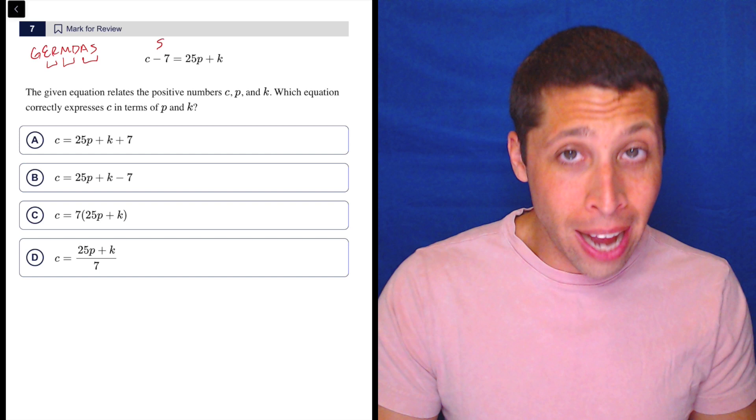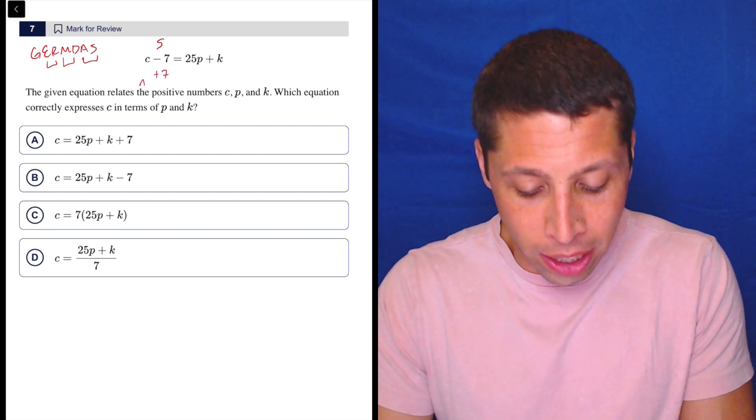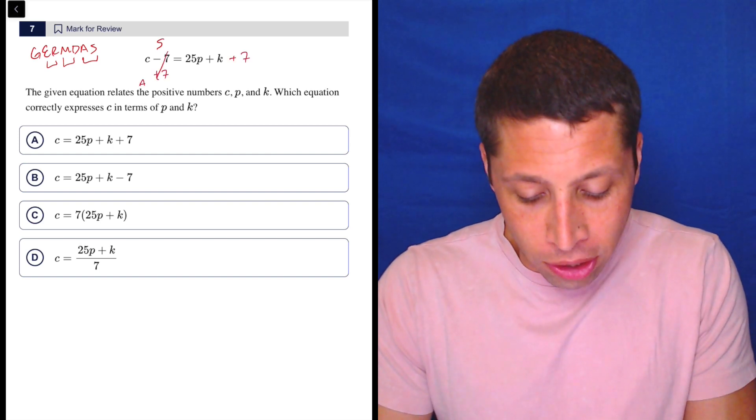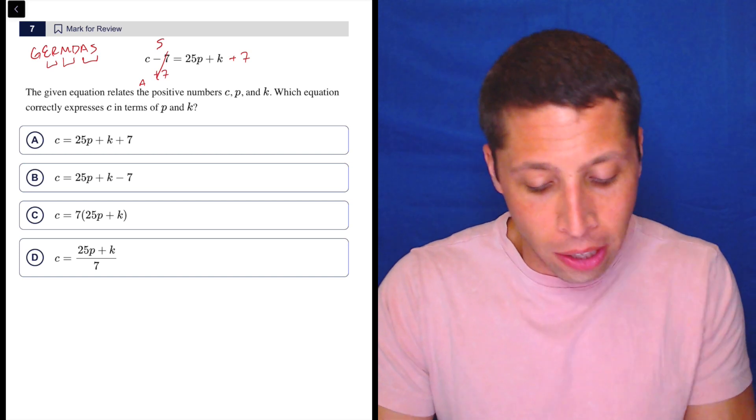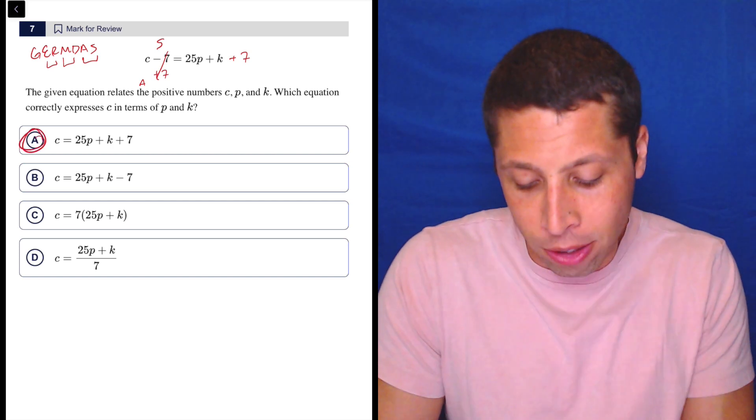Well, it's attached through subtraction. So we're going to use addition, its opposite, to get it out of there and literally just cancel it out here, leaves us with C alone, and then the seven just gets tacked on at the end. So choice A is the answer.